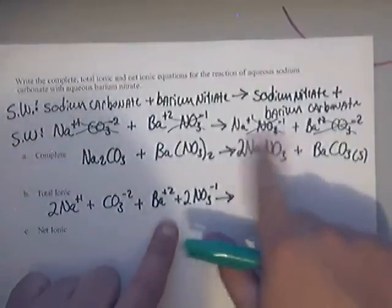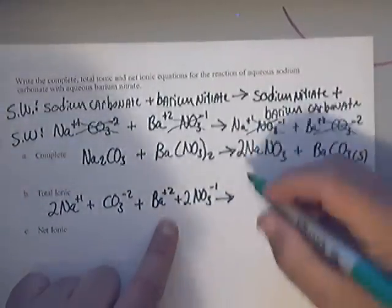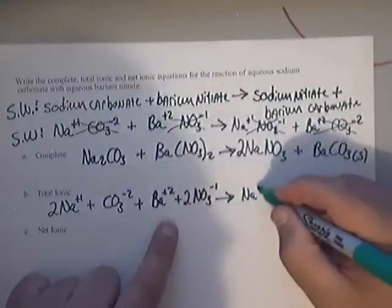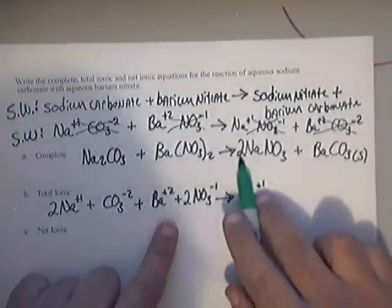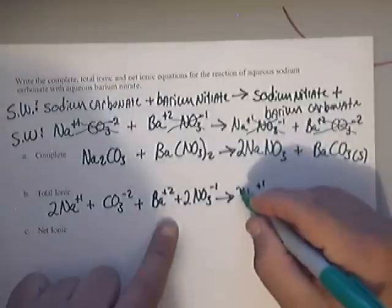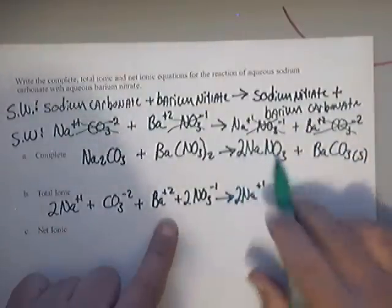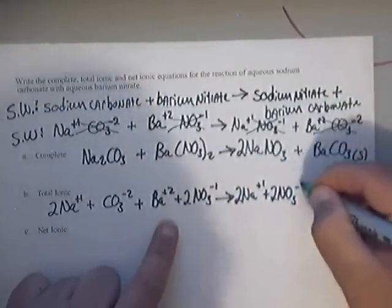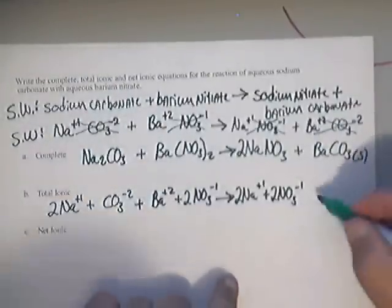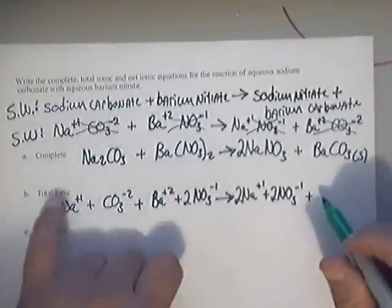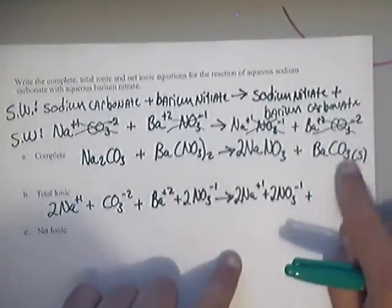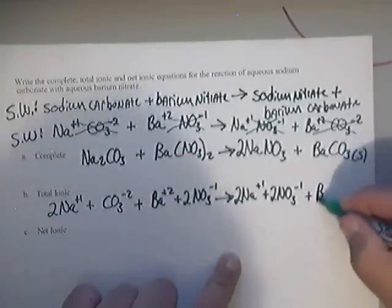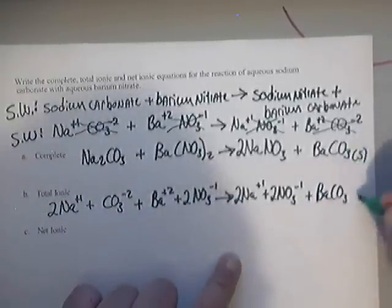Remember, this nitrate is soluble so you need to break it down. This breaks down into 2 Na plus 1. Look at the big 2 in front of the Na's. That's also 2 NO3's. So that's plus 2 NO3 negative 1. On the solid, here's what's nice. On the total ionic, if it's a solid, meaning a precipitant, don't break it apart. Just write it back down. So that's BaCO3 solid.